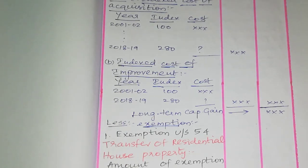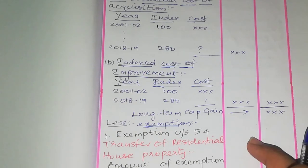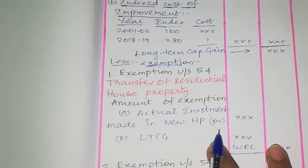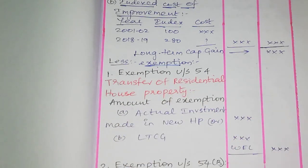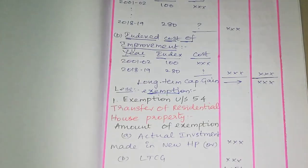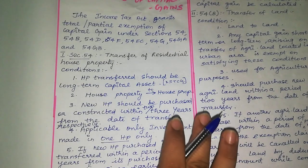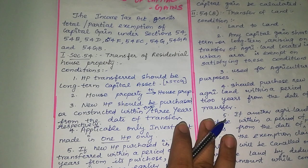For example, if we have a sale of land, we can claim an exemption in that case. First, Exemption Under Section 54. Transfer refers to the sale or exchange. If we sell an asset and invest the proceeds in a house property, we can claim this exemption. Section 54 applies only for long term capital assets — in the short term, Section 54 does not apply.